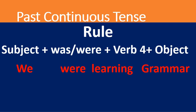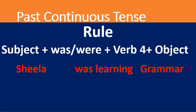Those are examples of past continuous tense. One more example: 'Sheila was learning grammar.' Here 'Sheila' is singular, that is why 'was' is used — 'was learning grammar.'